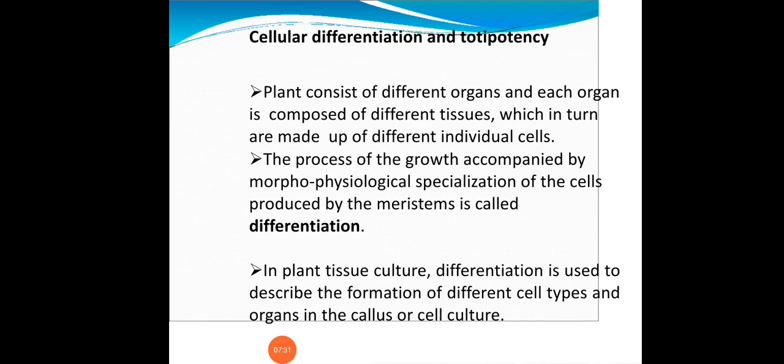Regarding cellular differentiation: a plant consists of different organs, and each organ is composed of different tissues. A cell forms a tissue, a group of tissues forms an organ, and a group of organs forms an organism. Plant organs include root, stem, anthers, meristem, pollen grains, xylem, phloem, and cambium. The process of growth accompanied by morphological and physiological specialization of cells produced by the meristem is called differentiation.